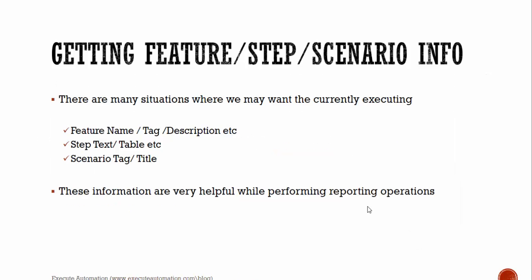There are many situations where we may want the currently executing feature names, tags, or description from a feature, or step information like text or table from a step, or tag or title information from a scenario. These kinds of information are very helpful when performing reporting operations.